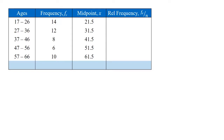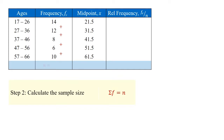There are 14 people in the first group, 12 in the second group, 8 in the third group, 6 in the fourth group, and 10 in the final and fifth group. We use the summation notation to add these together for a total of 50. This is the sample size.